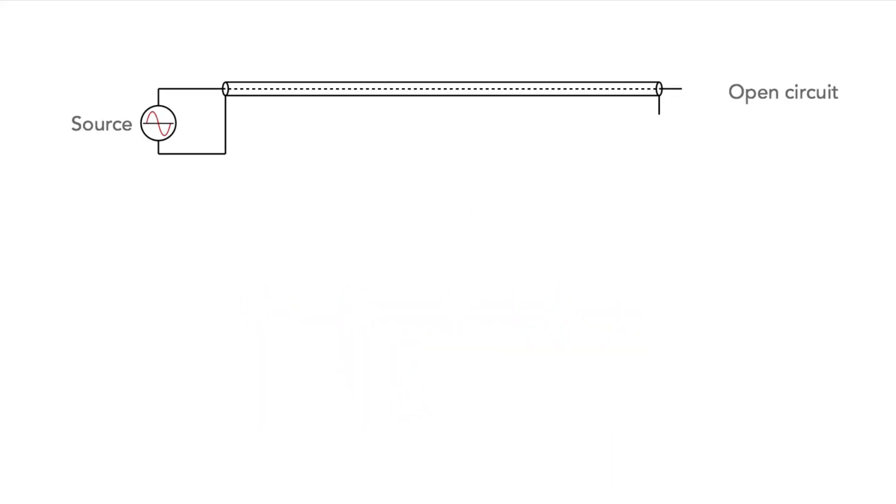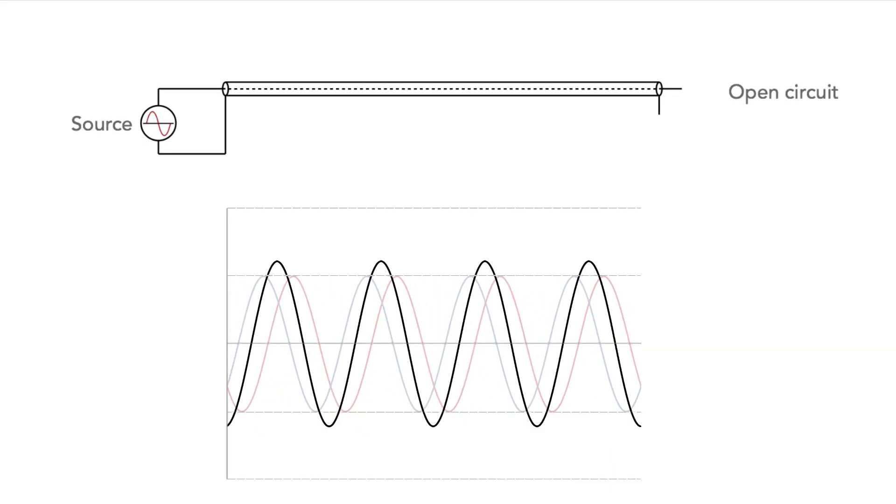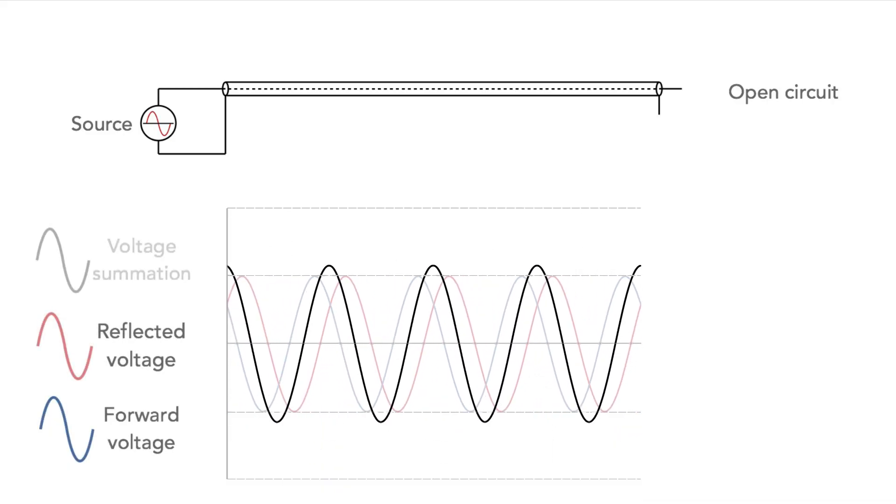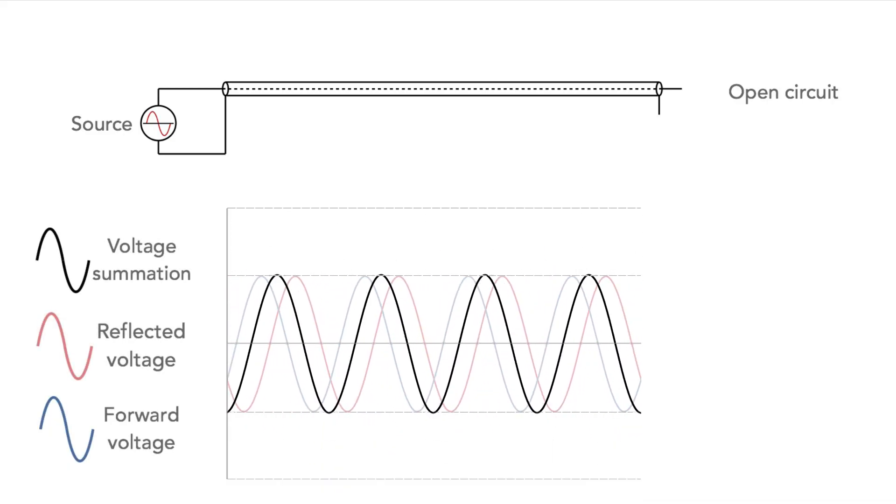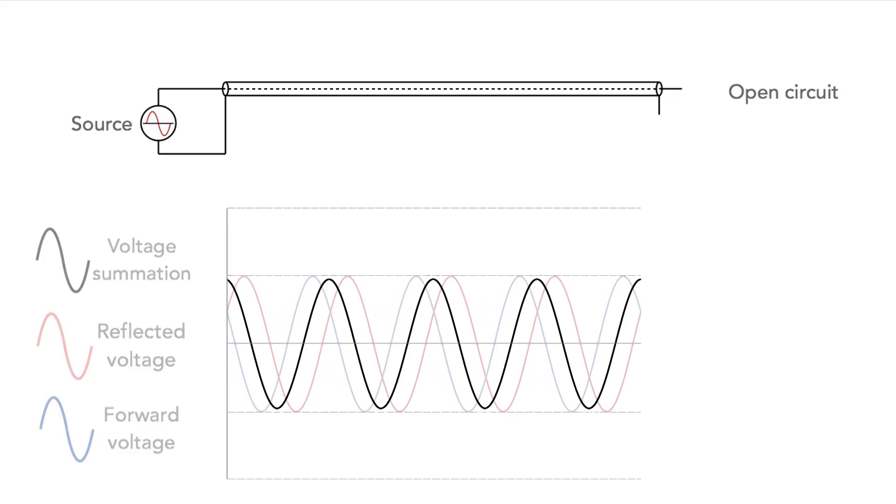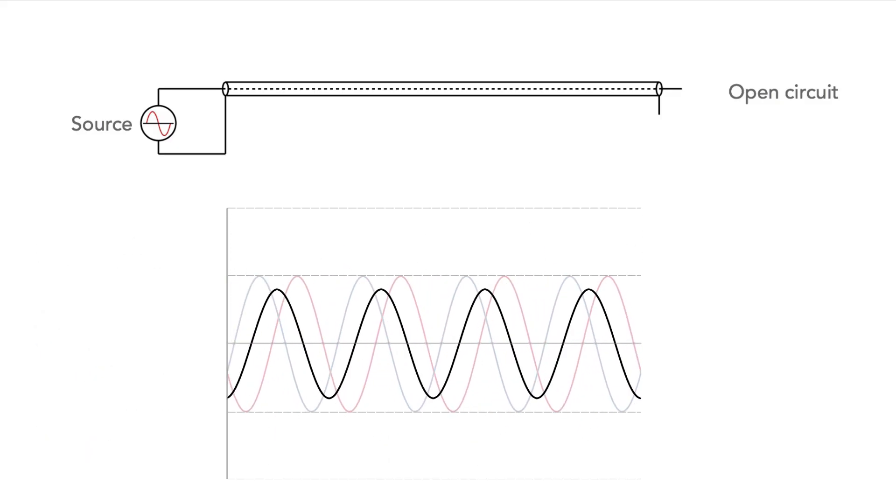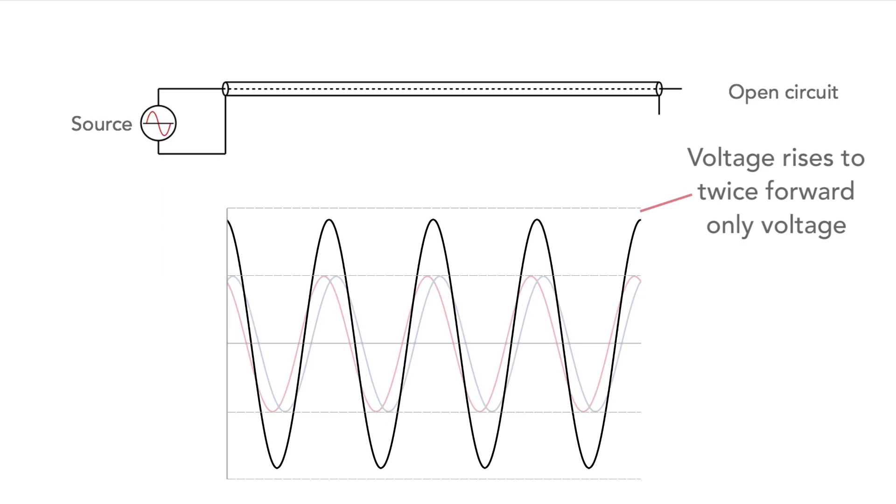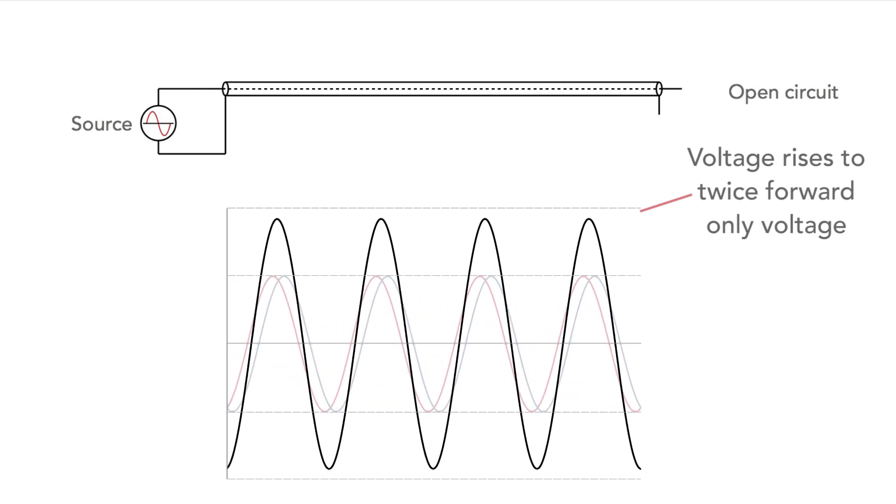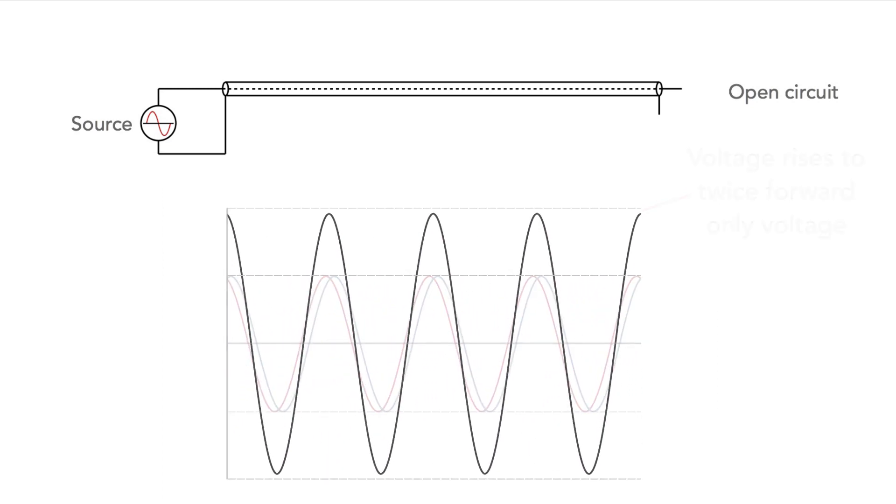Similarly if an open circuit is applied to the end of the feeder the voltage waveform moves towards the open circuit and again power is reflected. The current is zero at this point because it's an open circuit but the voltage rises to twice the voltage of the forward waveform with troughs and peaks back along the feeder.